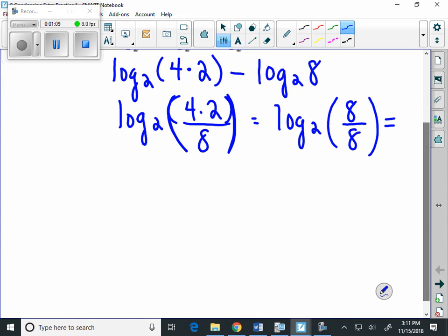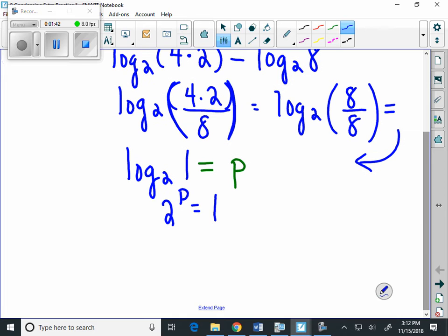We can even simplify one more time, and this gives us log base 2 of 1. We can figure out what log base 2 of 1 equals. I set it equal to p. We can convert it to an exponential, and it's 2 to the p equals 1. When we figure out what power we set 2 to to get 1, we find that we get 0, which is the answer to our first condensing logarithm problem.